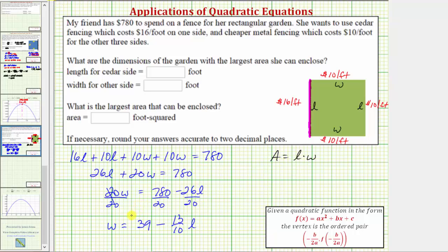Now that we know W equals 39 minus 13/10 L, we can perform a substitution for W in the area equation. The area is equal to L times the quantity 39 minus 13/10 L. Distributing, we have A equals -13/10 L² plus 39L.